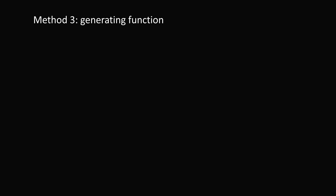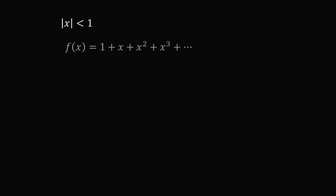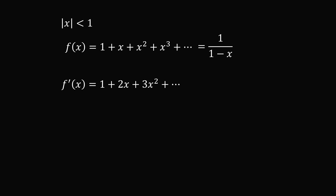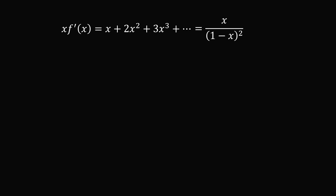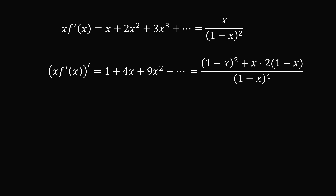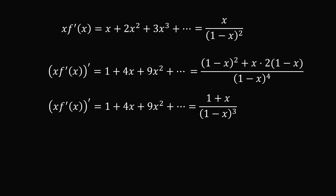Now here's a third way to solve it using a generating function. Suppose the absolute value of x is less than 1, and let f(x) equal 1 plus x plus x squared plus x cubed and so on — a geometric series with first term 1 and common ratio x, so this sum equals 1 divided by (1 minus x). Now let's differentiate term by term: 1 becomes 0, x becomes 1, x squared becomes 2x, x cubed becomes 3x squared, and so on. Differentiating 1/(1−x) gives 1 divided by (1−x) squared. We multiply both sides by x, then take the derivative again. Differentiating term by term gives 1 plus 4x plus 9x squared and so on. Differentiating x/(1−x)² using the quotient rule gives (1 + x) divided by (1 − x) cubed.